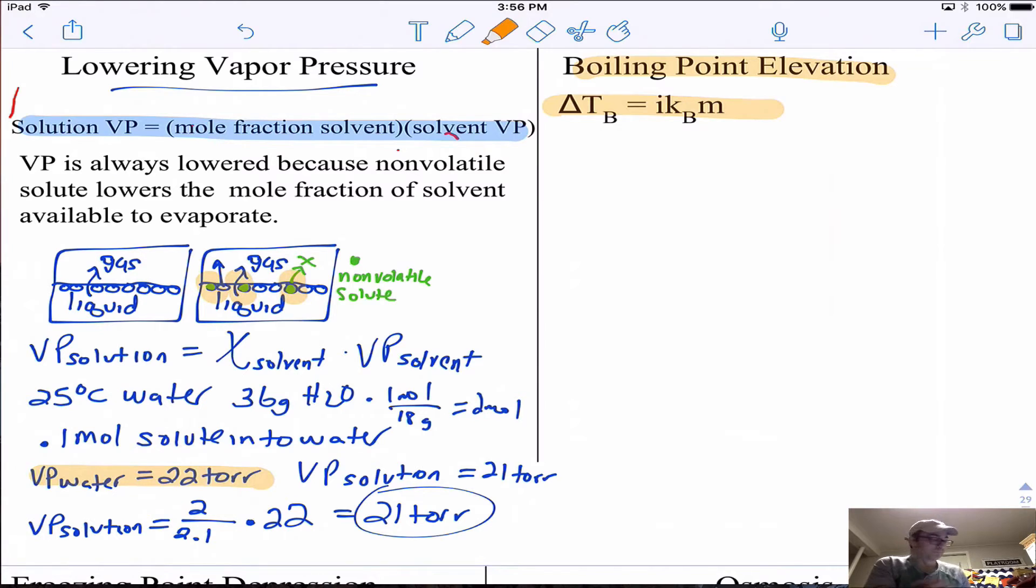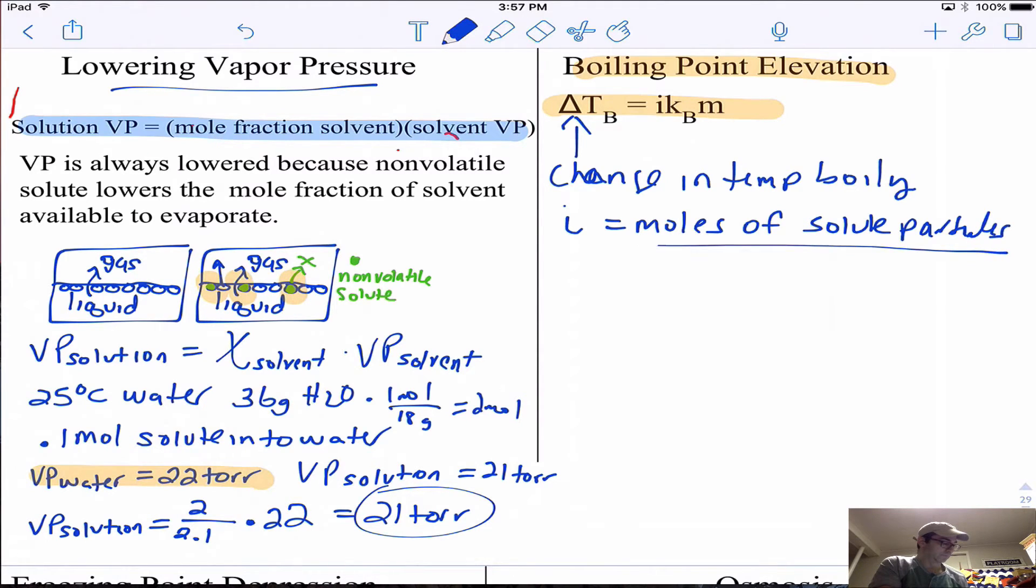Boiling point elevation says that the boiling point of water when it has solute in it will be higher. The equation is ΔT_boiling = KB × i × m, where i is how many moles of solute particles per mole of solute dissolved, and m is the molality.